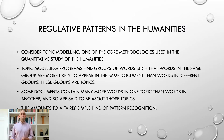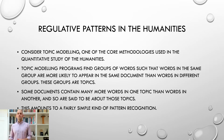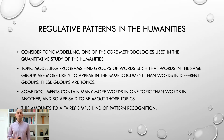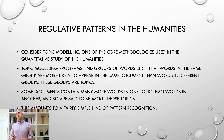Here's an example to try and drive this point home. Let's consider topic modeling, which is one of the core methodologies used in the quantitative study of the humanities. What do topic modeling programs do? Well, they find groups of words such that words in the same group are more likely to appear in the same document than words in different groups. So 'sock' and 'shoe' are more likely to appear together than 'shoe' and 'shovel,' for instance. These groups of words that are more likely to appear together we'll call the topics. Some documents contain many more words from one topic than another, and that's when we say those documents are about those topics.